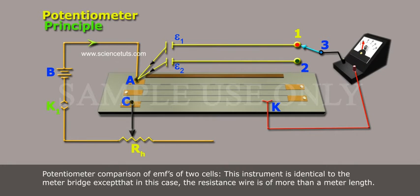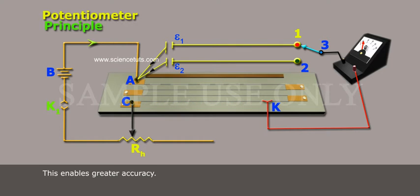Principle Potentiometer Comparison of EMFs of two cells. This instrument is identical to the meter bridge, except that in this case, the resistance wire is of more than a meter length. This enables greater accuracy.